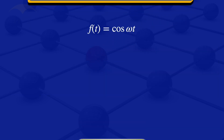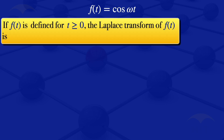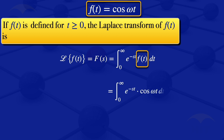Given a function f of t which is defined for t greater than or equal to 0, the Laplace transform of f of t, denoted by F of s, is the integral from 0 to infinity of e to the minus s t times f of t dt. In this case f of t is cosine of omega t, so we substitute it into the formula and obtain the integral from 0 to infinity of e to the minus s t times cosine of omega t dt.